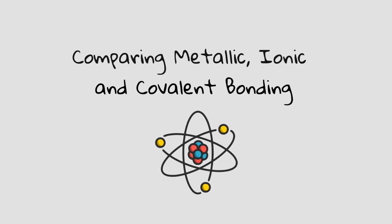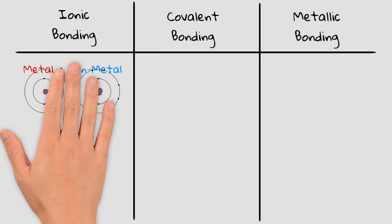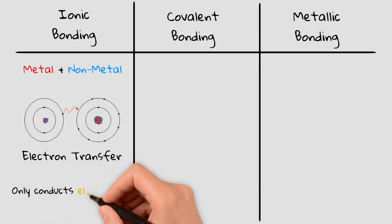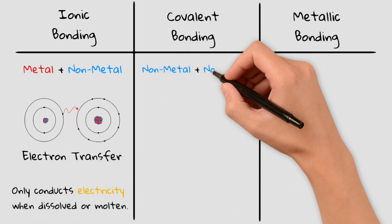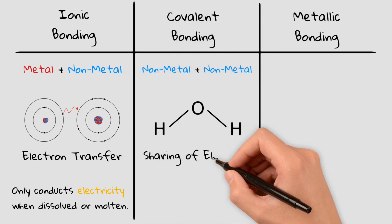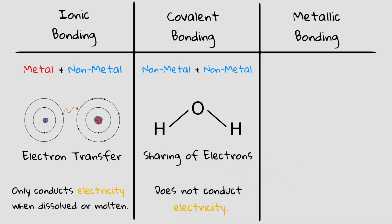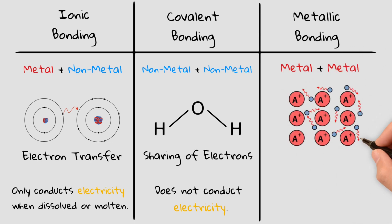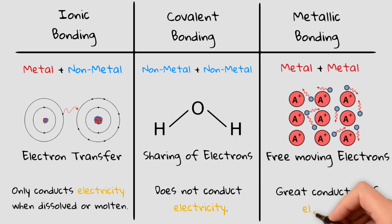Now, how does metallic bonding compare to ionic and covalent bonding? Ionic bonding happens between metals and nonmetals, where electrons are transferred to form charged ions — like sodium chloride. It only conducts electricity when dissolved or molten. Covalent bonding happens between nonmetals, where electrons are shared, forming molecules like water, and most covalent compounds don't conduct electricity. Metallic bonding happens only between metals — instead of transferring or sharing electrons, metals have a sea of delocalized electrons, making them great conductors in any state, which is why copper is used in wiring.